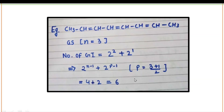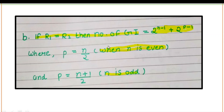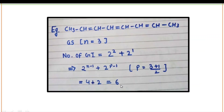Here is an example related to this formula. N equals 3 — double bonds are 1, 2, and 3 — so there are 3, which is an odd number of double bonds. That's why we use the formula P = (N+1)/2. Substituting into the main formula gives the answer as 6, which means 6 geometrical isomers are present for this series.